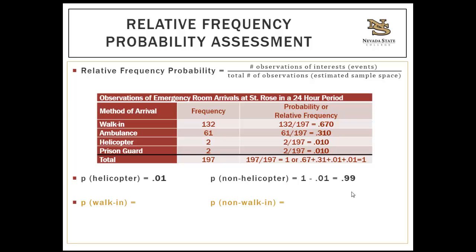Now pause this video and attempt the problems in gold, then resume when you're finished. The probability that someone will walk in: 132 walk-ins divided by 197 equals 0.670. Using the complement rule: if there's a 67% chance someone walks in, then the probability that someone will not walk in is 1 minus 0.67 equals 0.33 — a 33% chance the next patient arriving will be a non-walk-in based on this data.